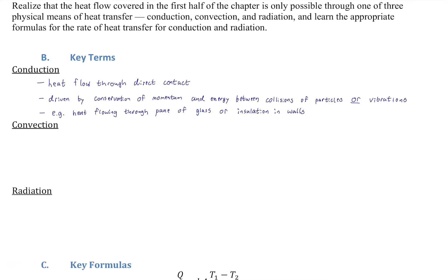The second way heat can flow is convection — heat flow through the bulk movement of fluids. It's packets of fluid moving collectively, not individual particles. This is what separates it from conduction through air: warm air molecules rise collectively rather than transferring energy one molecule at a time.